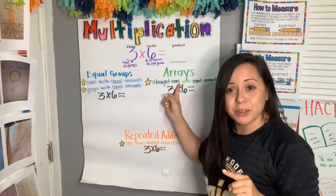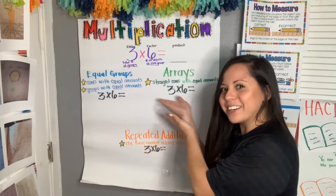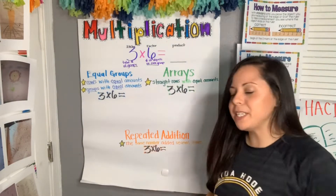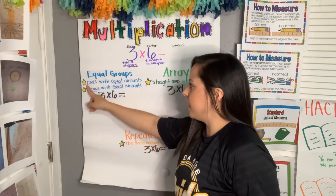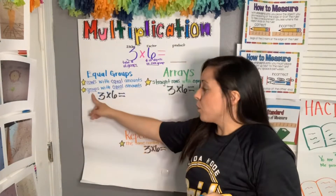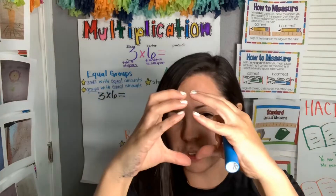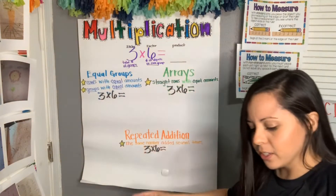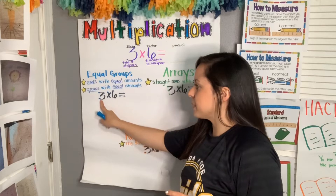The second way is using arrays — an array, not a person named Ray. And the last way is repeated addition. Let's begin with equal groups. With equal groups, we have rows or groups with equal amounts. For this anchor chart I'm going to use circles as the groups. Our number sentence is three times six equals — remember, this is a factor and this is a factor.